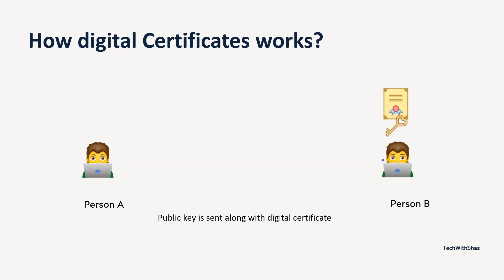This is how the certificate concept works at a very simplified level. I will also make some videos that will show a deeper understanding of this. But for now, whenever person A wants to send a message to person B, he will use the certificate obtained from the CA authority like Entrust or DigiCert along with the public key and send it to person B. Person B will verify that certificate, decrypt the message, and there is no chance of any hacking or tampering with the message.